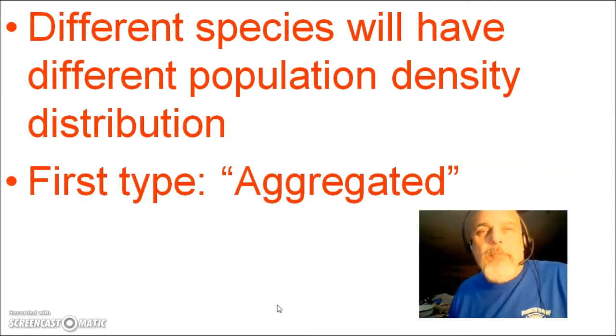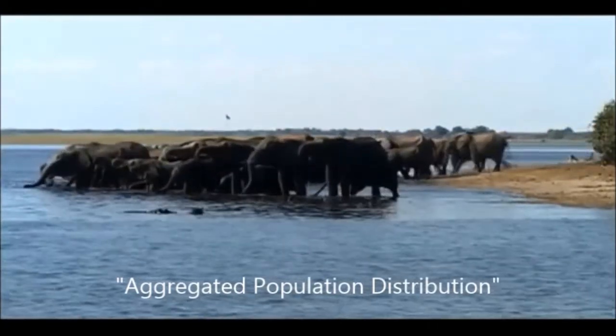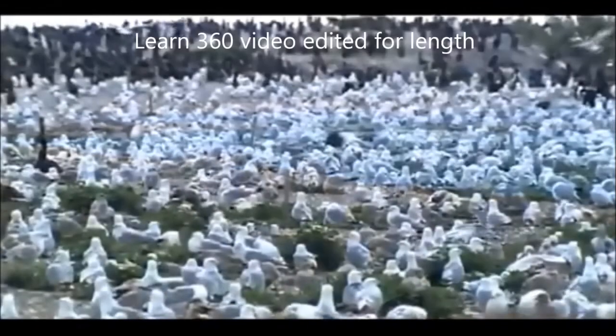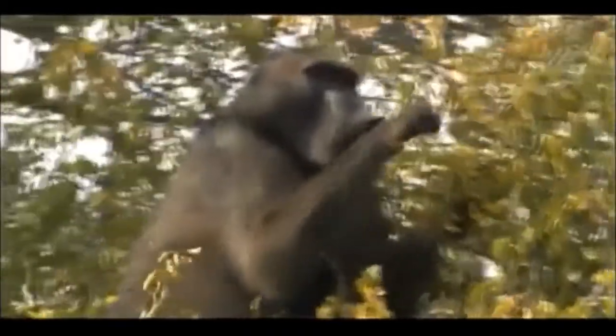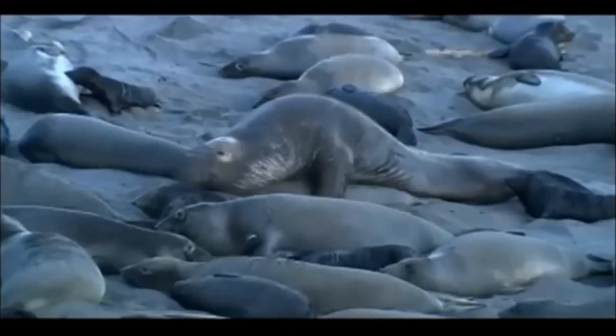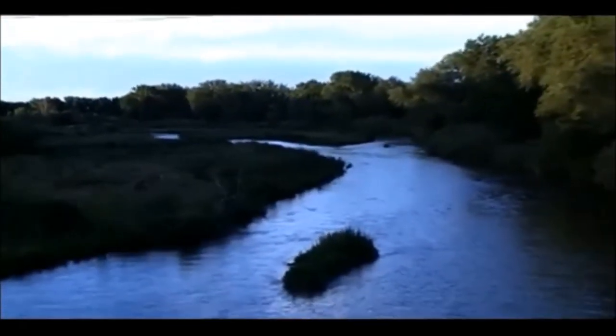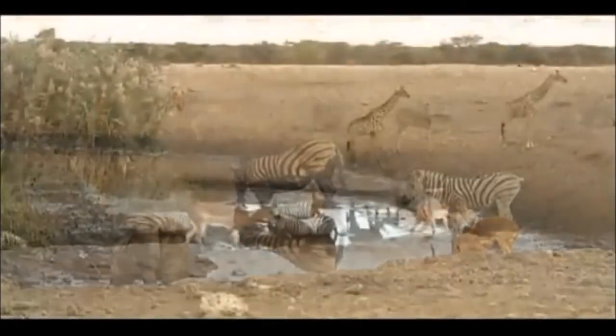Different species will have different population density distribution. The first type is aggregated population density distribution — the most common pattern, in which members of the population tend to live in groups. Many species form family or social groupings such as elephant herds, baboon troops, flocks of birds, or schools of fish. Flocks provide many eyes on the lookout for localized food, such as a tree full of fruit. Schooling fish avoid predation by confusing predators with countless flashing bodies. Some species, like elephant seals, form temporary aggregations for mating. Other populations cluster not for social reasons but because resources such as nutrients, shelter, or water are localized — for example, cottonwood trees grow along streams and rivers.